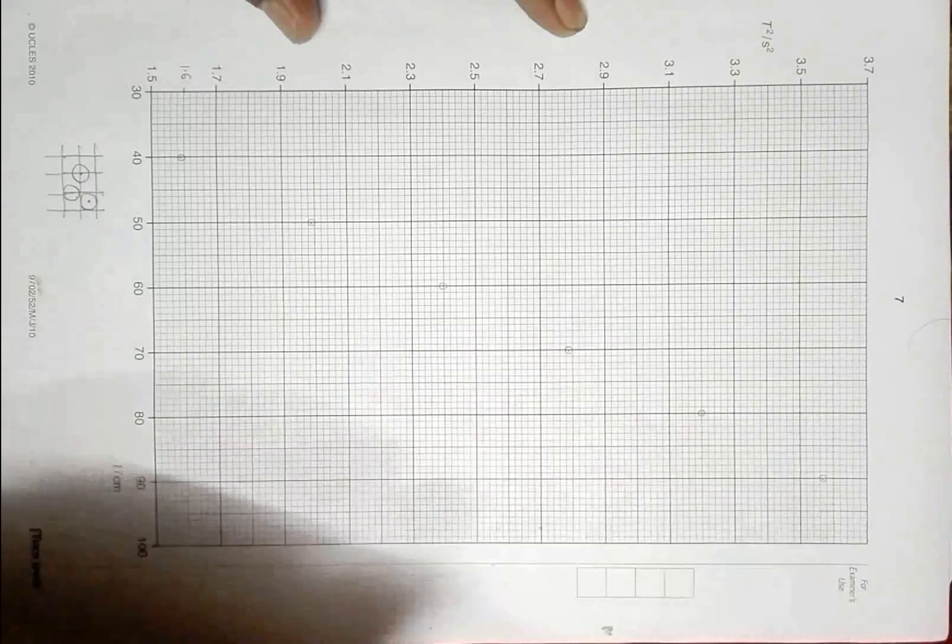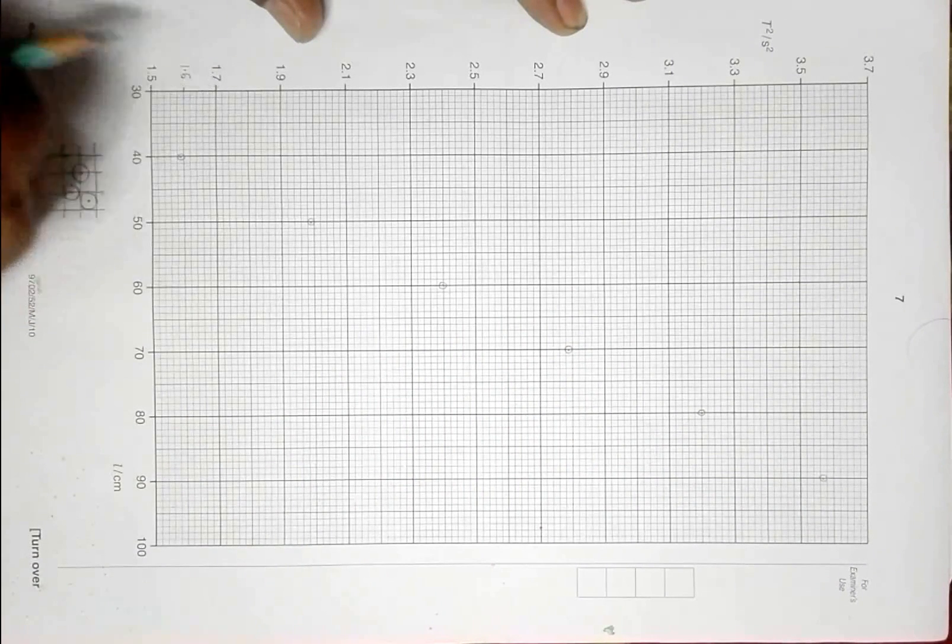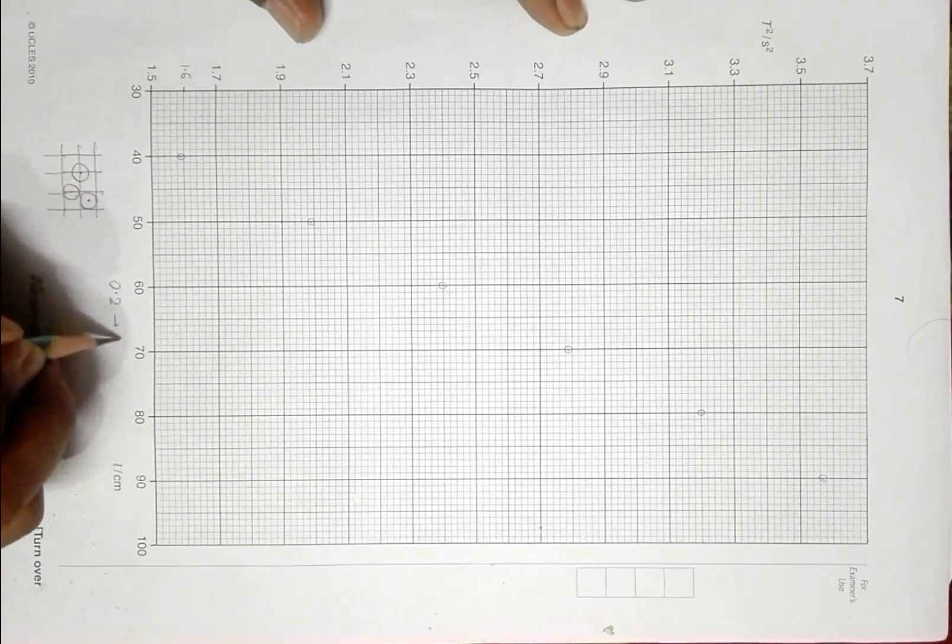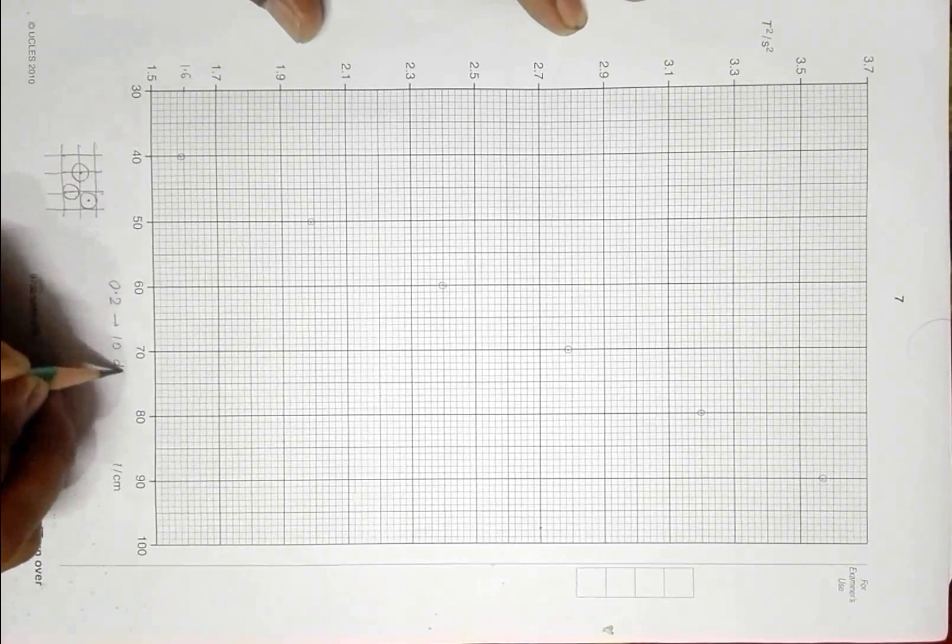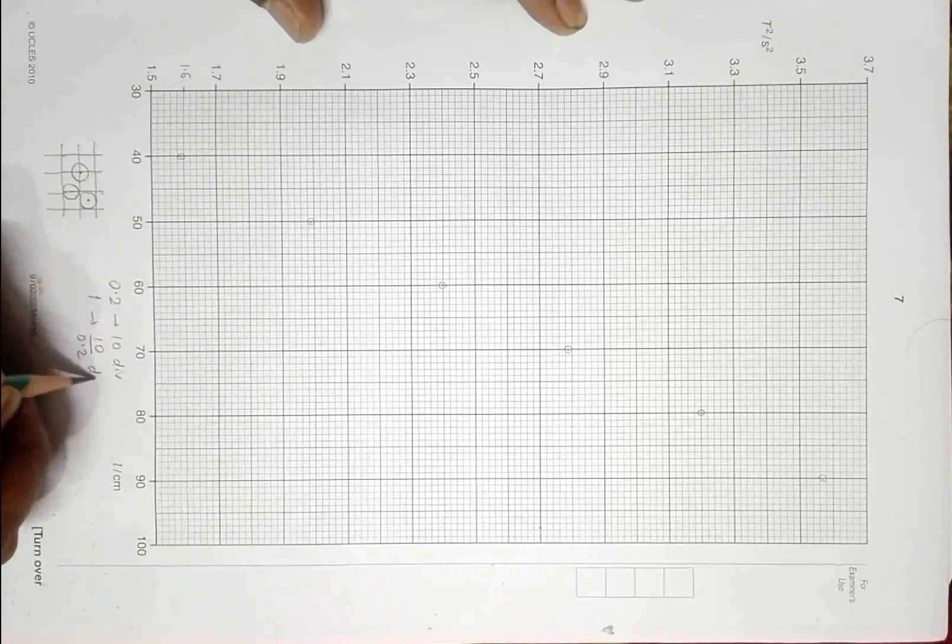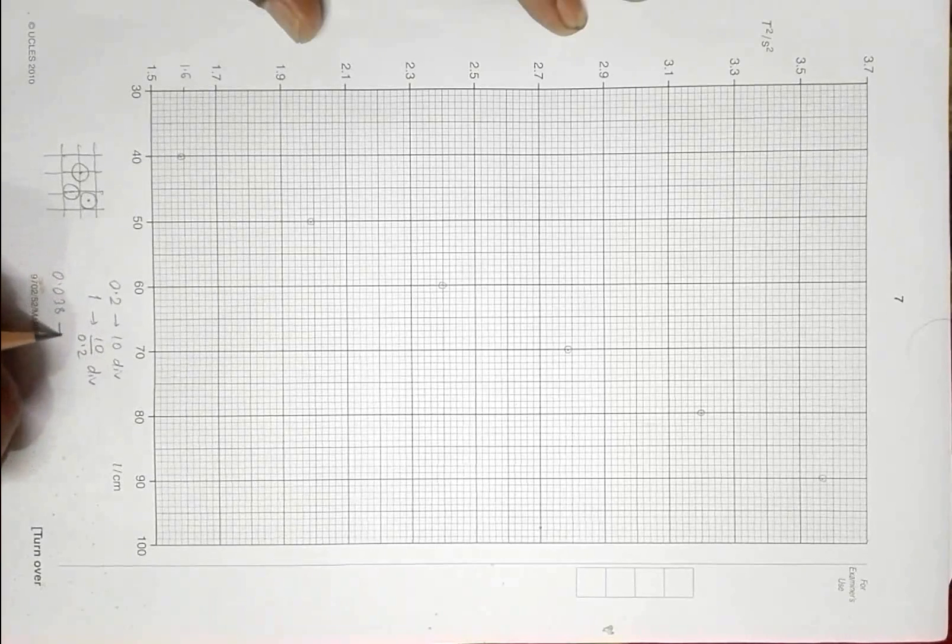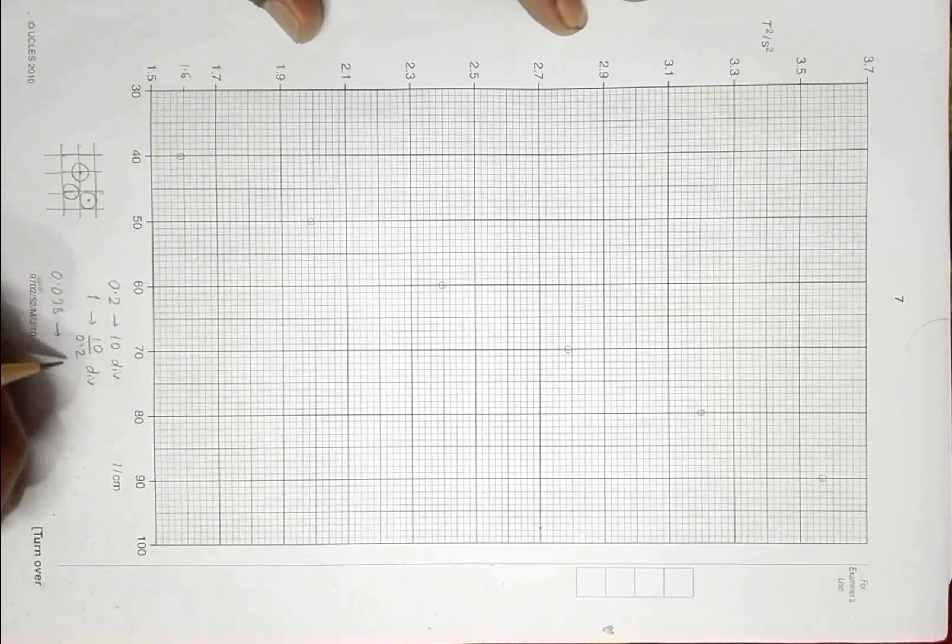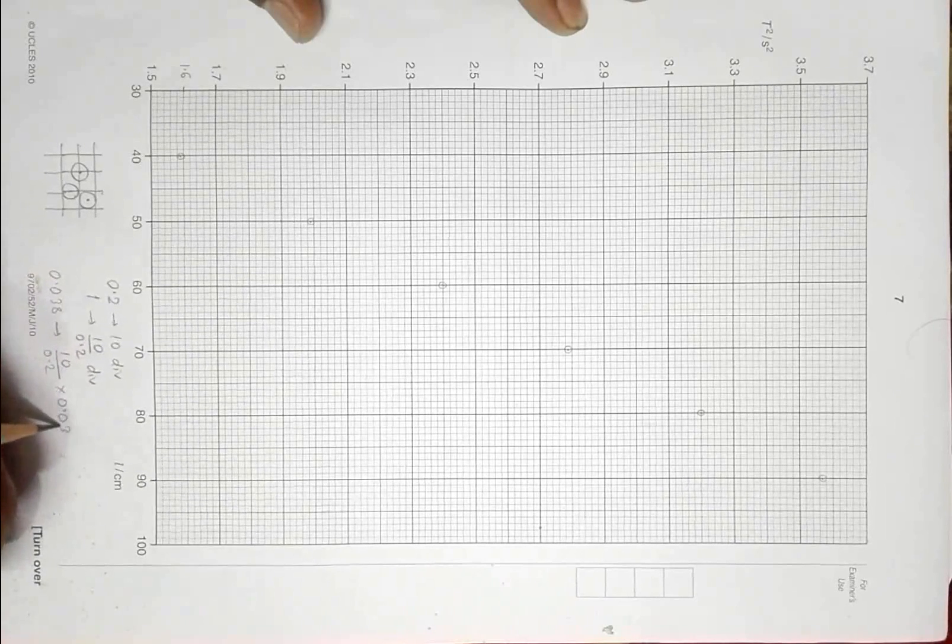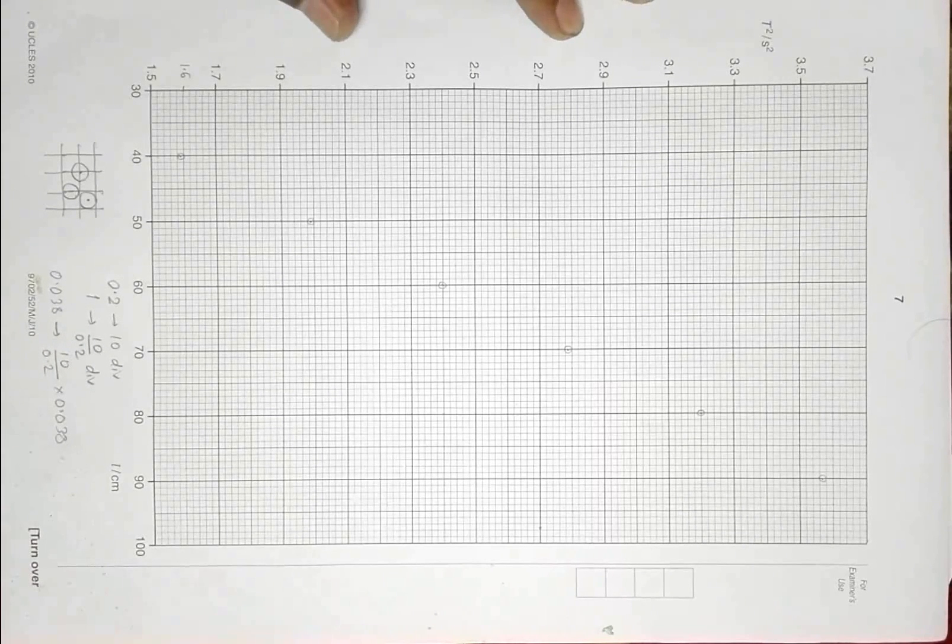So how to calculate that? Let's go here. From 1.5 to 1.7 it is 0.2, so when I go up by 0.2 seconds squared, we have 10 divisions. So if it is 1, it will be 10 by 0.2 divisions, and if it is 0.038, it should be 10 by 0.2 into 0.038.